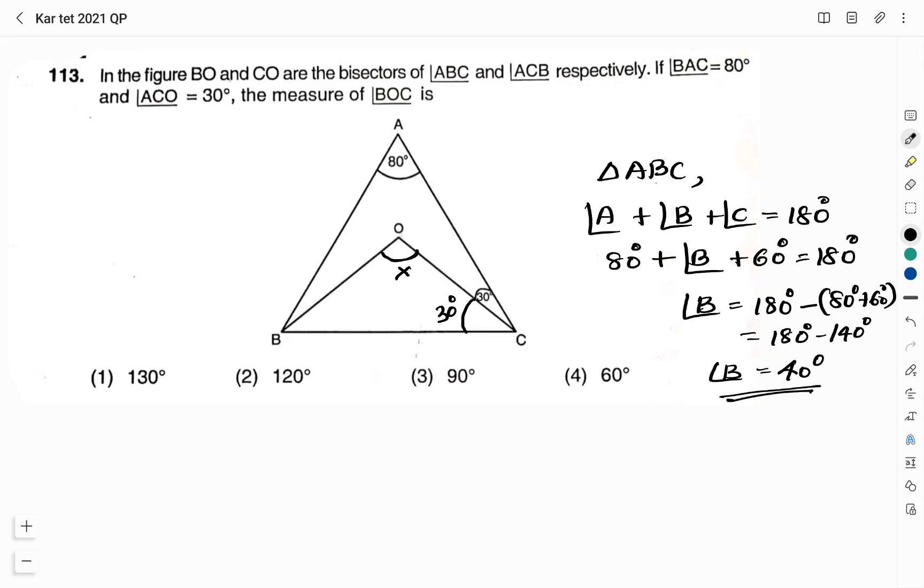It is given that OB is the bisector of angle ABC. Overall B we have is 40 degree and this half is 20 degree, remaining half is 20 degree. I mean to tell angle ABO is equal to angle OBC. Since OB is the angle bisector and both is equal to 20 degree, overall angle means this angle B which is nothing but angle ABC, that is equal to 40 degree.